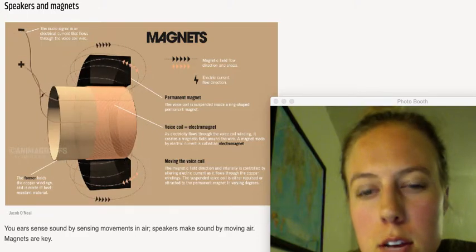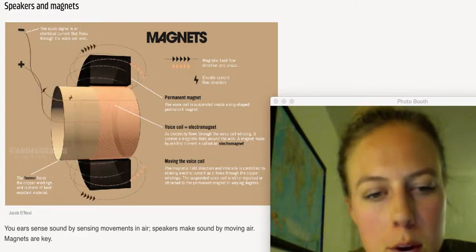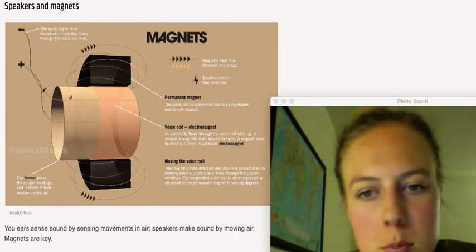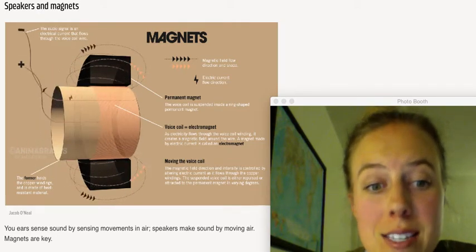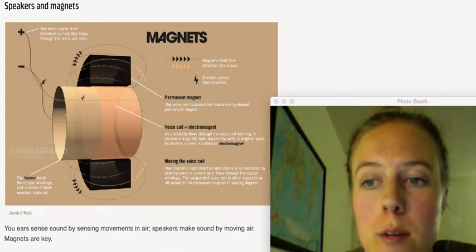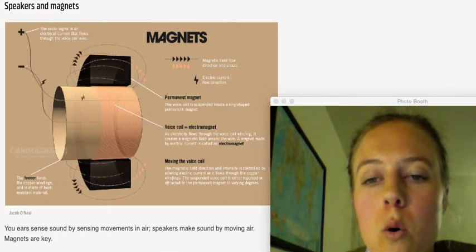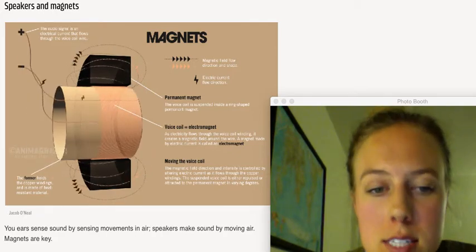So the neodymium magnet itself is not going to vibrate. A few reasons, because A, it's a permanent magnet, and B, it's more massive, has more mass than our voice coil. So the spider helps keep the voice coil on the axis with the neodymium magnet as well.